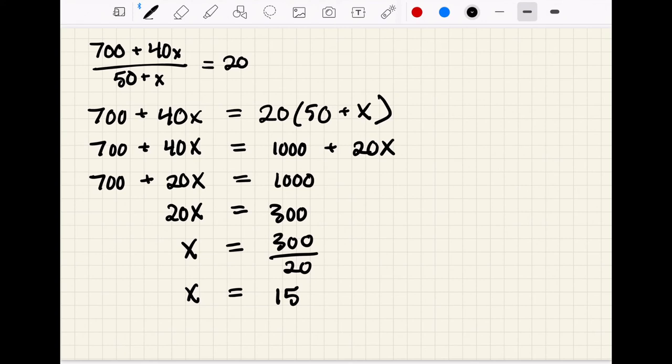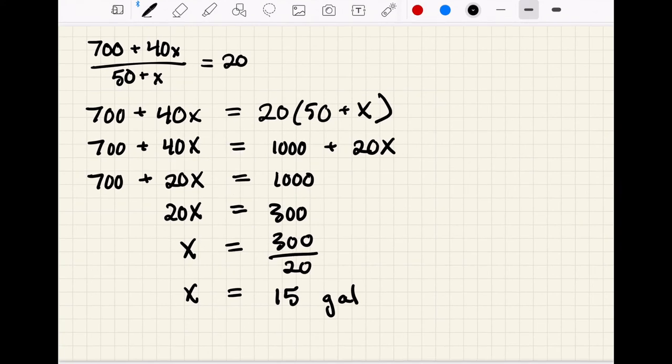So we have solved for X. We knew it was going to be in gallons. So our result is 15 gallons. And what that means is that that is the volume of our spirits to add in order to hit our target alcohol of 20% in that final blend.